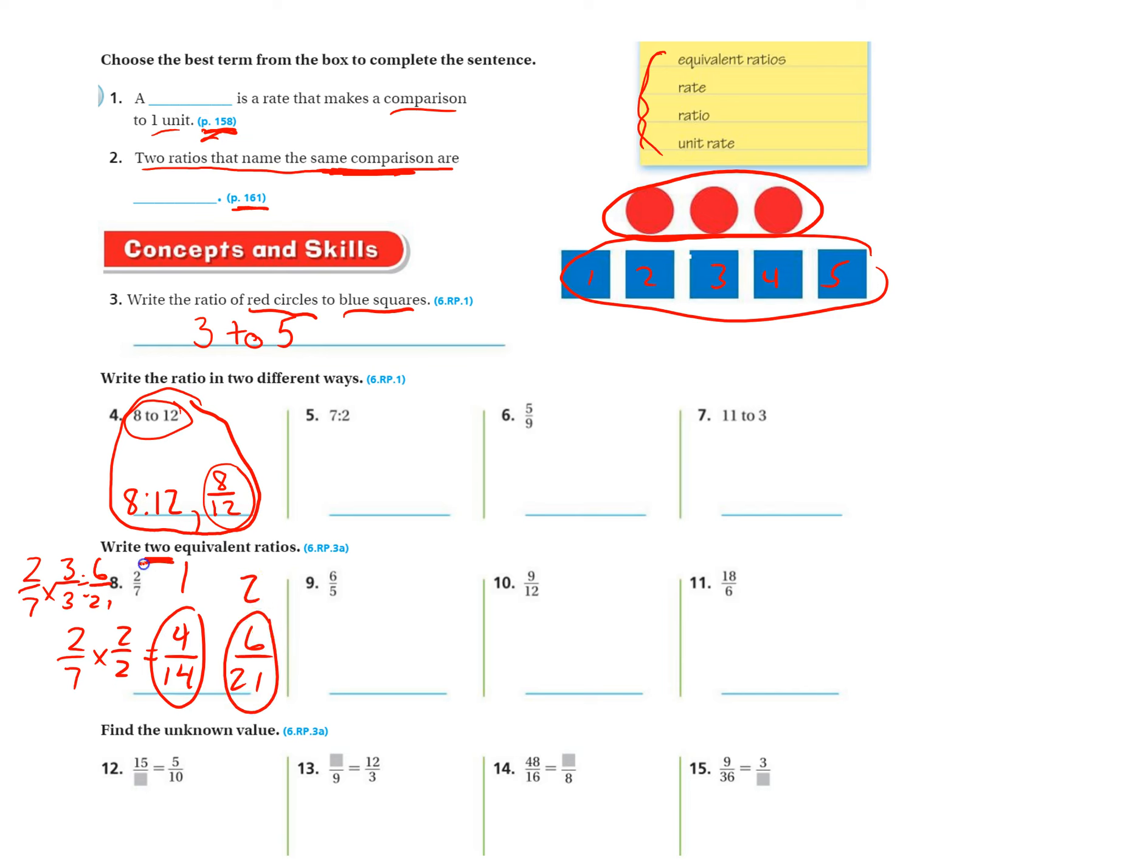There's my second ratio. It asks for two equivalent ratios. And you can do the same type of strategy to solve nine, ten, and eleven.